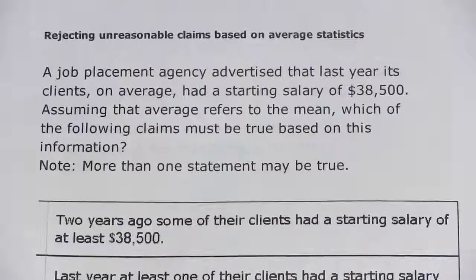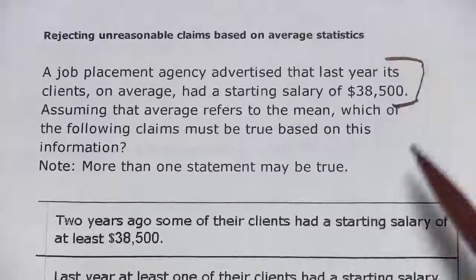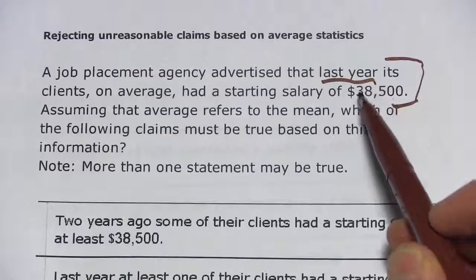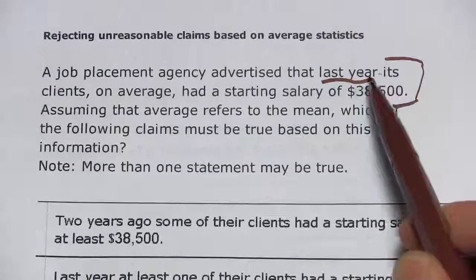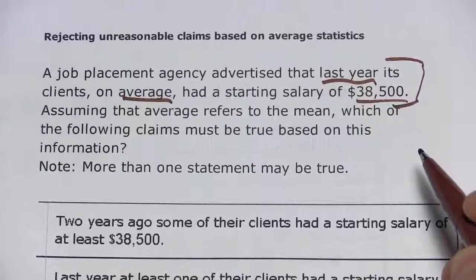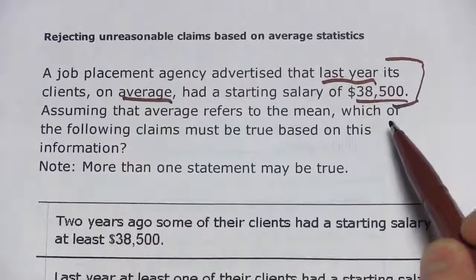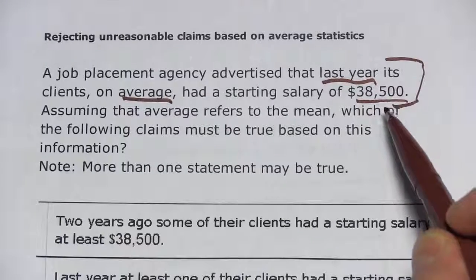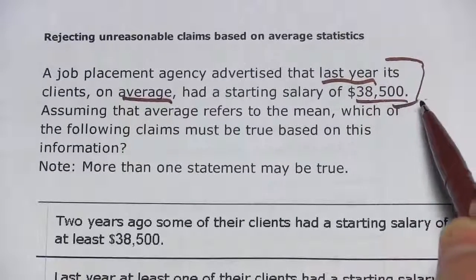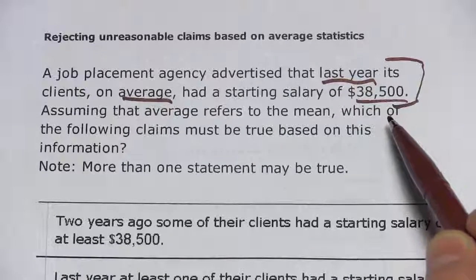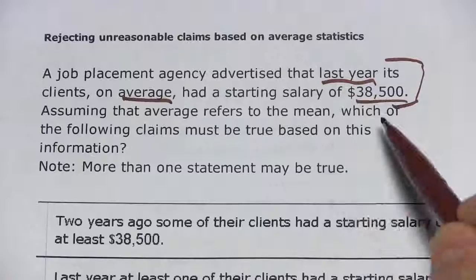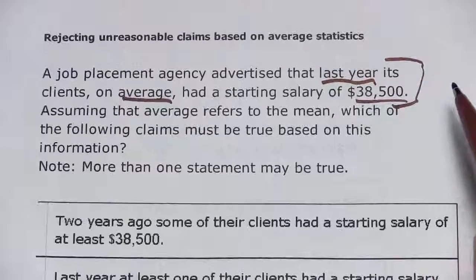Let's think about what we actually know first. This is the sentence that gives us what we know. First of all, it's about last year. So if somebody makes a claim about any other year than last year, we can just say we don't know, because we only know something about last year. What we know is that those starting salaries had an average of $38,500. One way to get that average could be that everybody got paid $38,500. The other way would be that some people earned above $38,500 and some earned below, and they balance out to $38,500. Those are really the only two cases we could have.